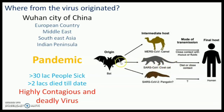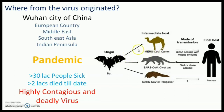In 2013, MERS — which is also a coronavirus, the Middle East Respiratory Syndrome coronavirus — occurred in the Arabian Peninsula. That is why the name is Middle East, and the intermediate host was a camel.